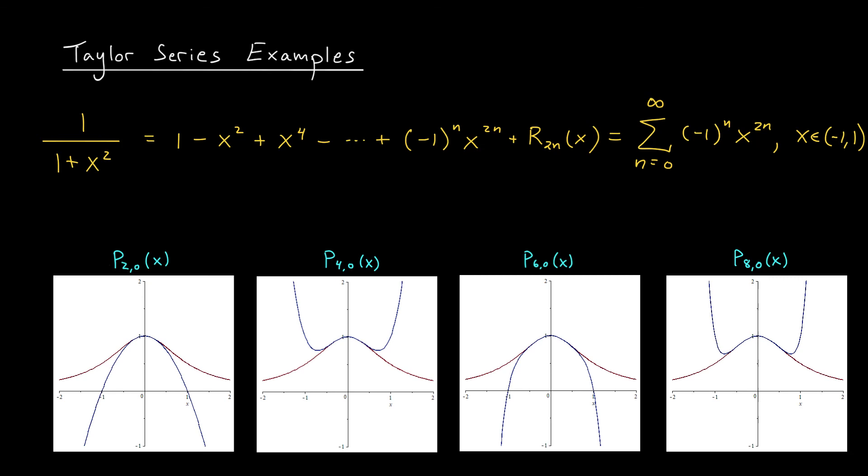You can actually see by plugging in x values outside of this range that things go horribly, horribly wrong. Take for example, x equals 1. If you plug in x equals 1 to the function on the left, you get 1/2. But if you plug it into the series on the right, you get 1 - 1 + 1 - 1 + 1 - 1, and so on. Now there's clearly something unusual with what's taking place here. And in fact, this formula is not correct. We'll see why in the next lesson.